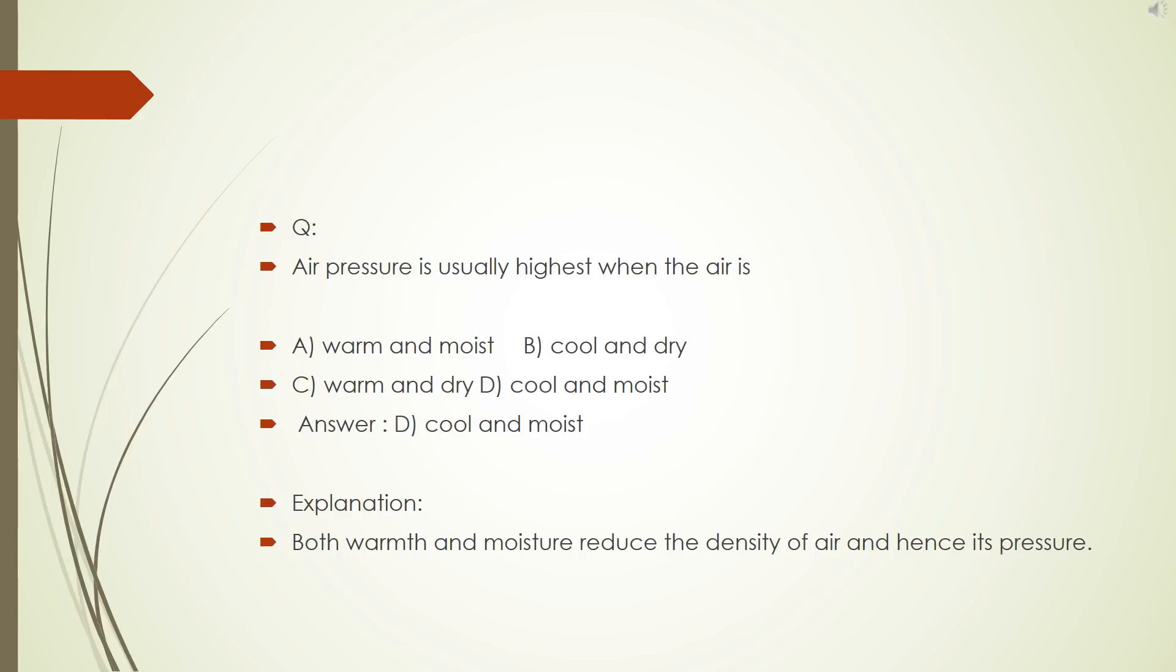Air pressure is usually highest when the air is A, warm and moist, B, cool and dry, C, warm and dry, D, cool and moist. The correct answer is D, cool and moist. Explanation: warmth and moisture reduces the density of the air and hence its pressure.